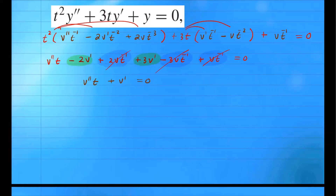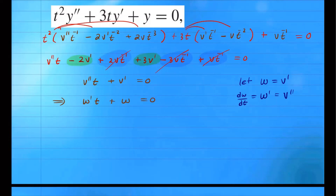Now we introduce a substitution to reduce the order. Let w equal v prime, so w prime equals v double prime. This reduces the second-order equation to a first-order equation. The independent variable is t, so w prime is dw/dt. Our equation becomes: w prime times t plus w equals zero.